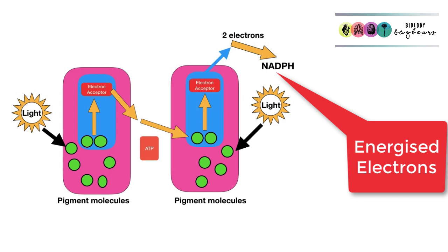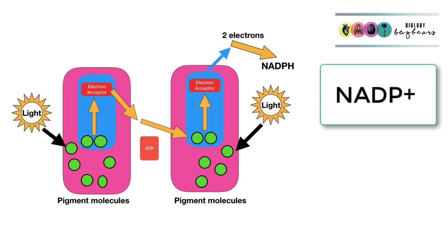The electrons are now going to be passed by that acceptor molecule to a new molecule, NADP. This is where they're trapped.